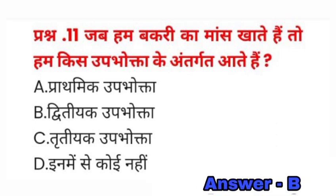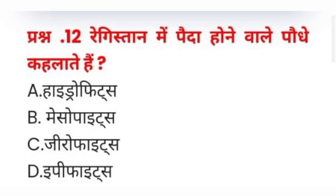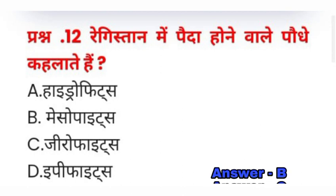Question number twelve: रेगिस्तान में पैदा होने वाले पौधे कहलाते हैं — A) Hydrophytes, B) Mesophytes, C) Xerophytes, D) Epiphytes। इसका सही जवाब C) Xerophytes होगा।